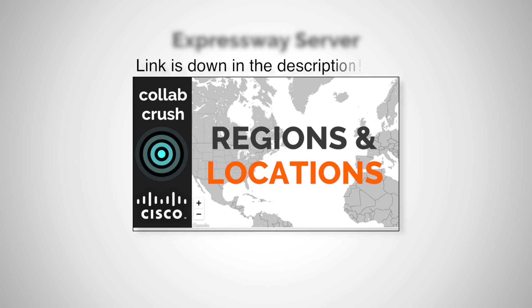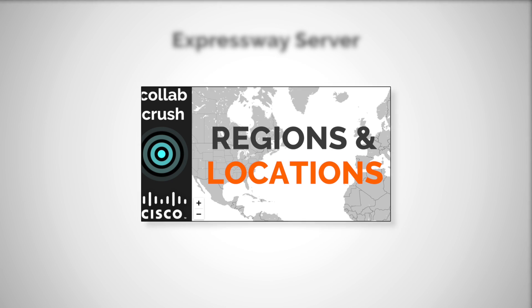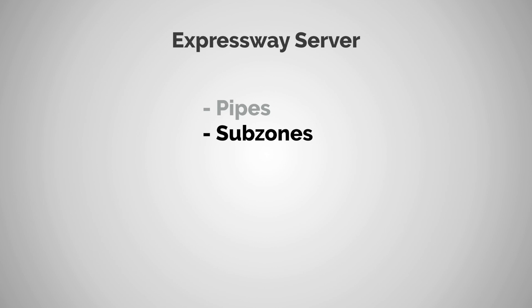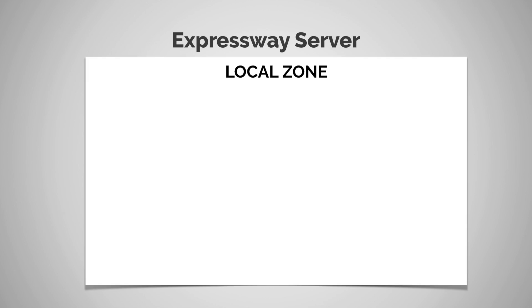On the Expressway there are two ways that you can configure bandwidth restrictions: you can use something called pipes, or you can use sub zones. Today we're going to focus entirely on controlling bandwidth with sub zones, and in the next video we'll focus on controlling bandwidth with pipes.